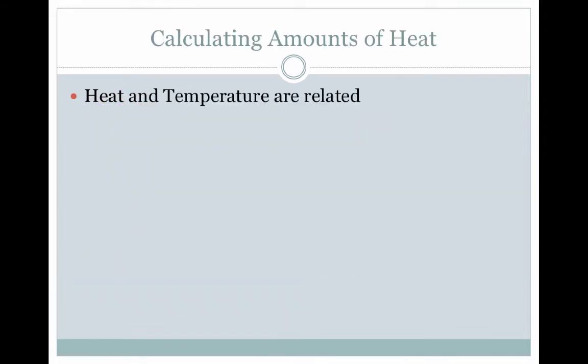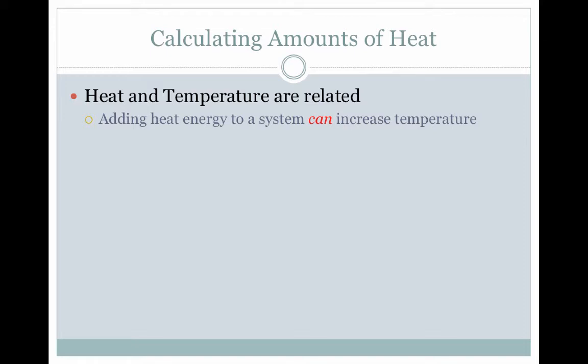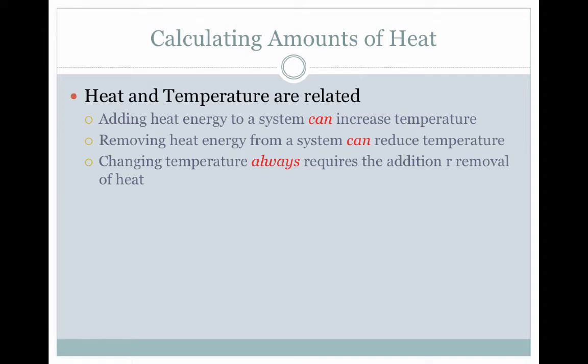So let's talk about some of those contrasts and some of those connections here. Heat and temperature are obviously related to one another. Adding heat to a system can increase the temperature of that system. We'll learn later in the chapter that's not always the case. Removing the heat from the system can reduce temperature, just like we can increase temperature by adding. And changing temperature always requires there to be the addition or removal of some sort of quantity of heat energy.